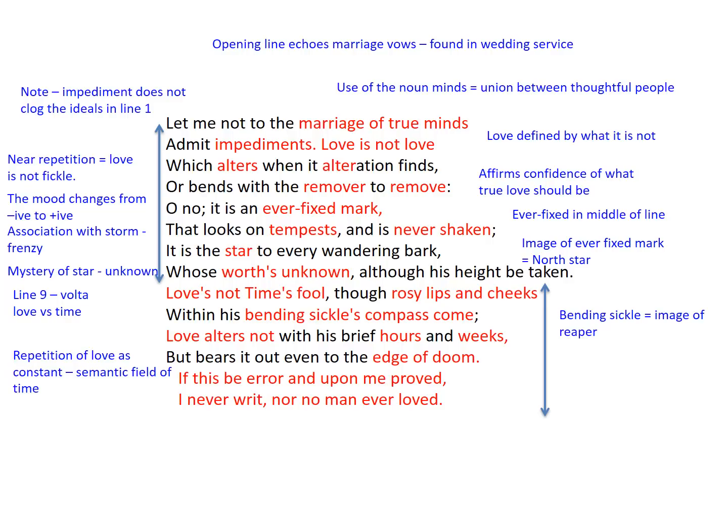By the end of the third quatrain, it is crystal clear: love does not change, it will not alter, it will not relent. The emphasis on love in line twelve lasting to 'the edge of doom' stresses how much love will persist — be it to a judgement day or an apocalypse.